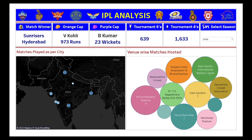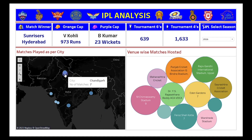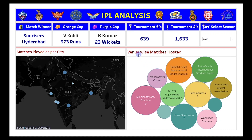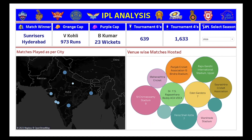Moving to the third dashboard, the KPIs are again the same. The first chart here is a map chart representing the matches played by city — the bigger and darker the circle, the more matches played in that particular stadium for the respective season. We also have a venue-wise bubble chart showing matches hosted. You can see the most matches were hosted at Chinnaswamy Stadium for the 2016 season.